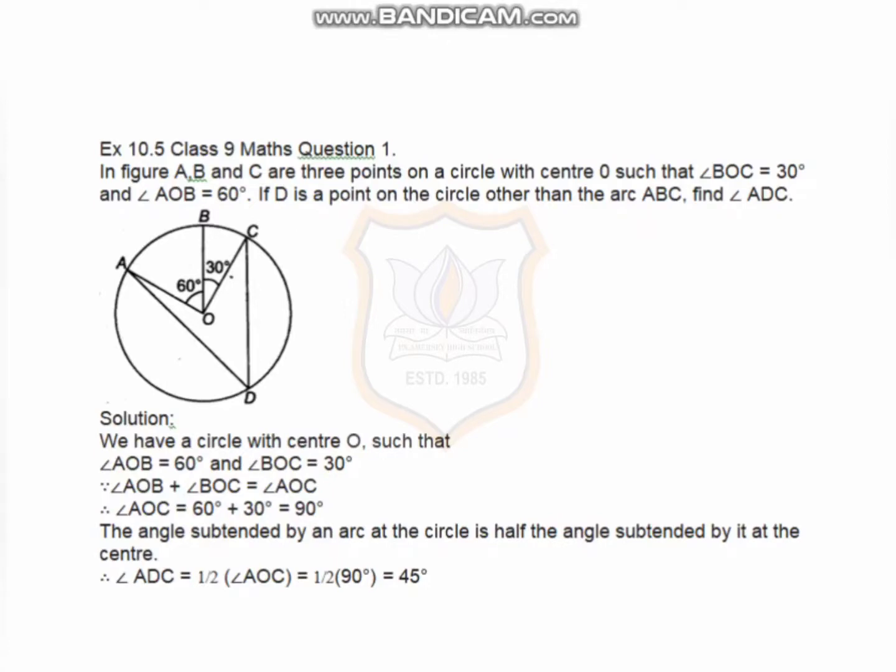In figure ABC, there are three points on a circle with center O, such that BOC equals 30 degrees and AOB equals 60 degrees. If D is a point on the circle other than the arc ABC, find angle ADC.